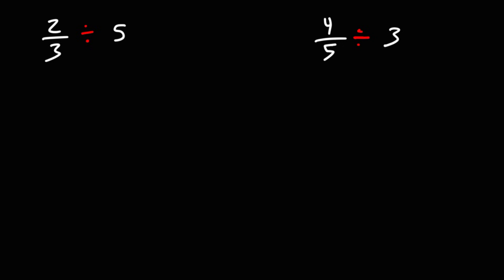Let's talk about how we could divide a fraction by a whole number. So what is 2 over 3 divided by 5? In order to find the answer, we'll need to convert 5 into a fraction. We could do so by putting it over 1.